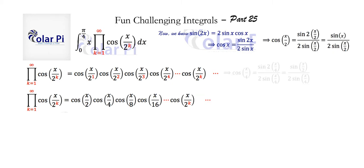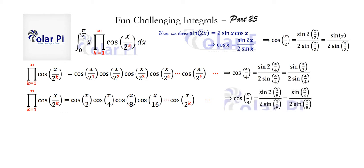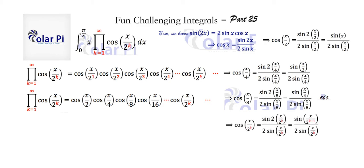We do the same with cosine of x over 4, cosine of x over 8, and so on — et cetera — skipping to the kth term in this product. So cosine of x divided by 2 to the k equals sine of x divided by 2 to the k over 2 times sine of x divided by 2 to the k, by multiplying 2 and x over 2 to the k.